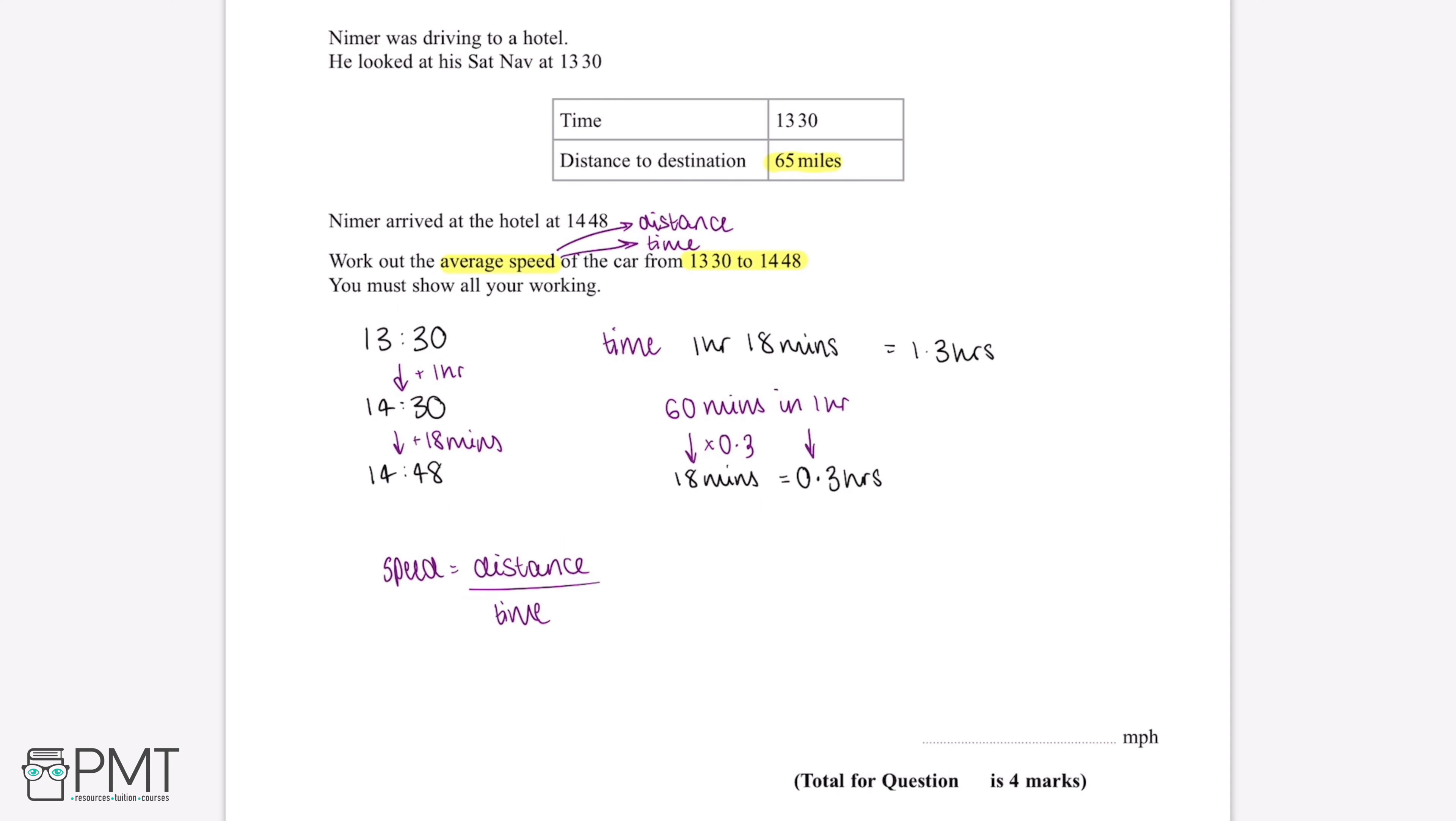If we substitute in the values we've been given in the question and the ones we've worked out, this tells us that the average speed is 65 divided by 1.3. If we put this into our calculator, this gives us a final speed of 50 miles per hour, and this is our final answer.